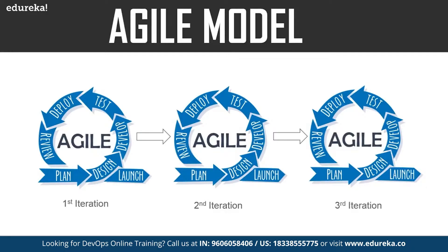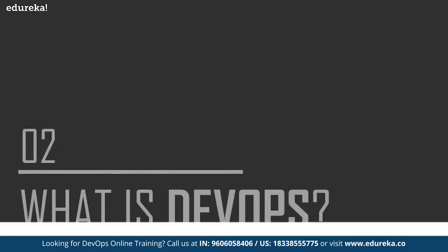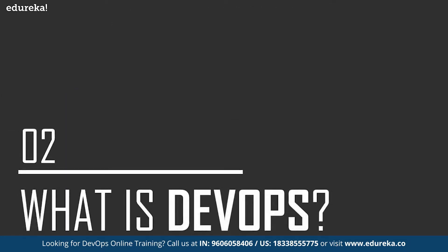So this model was better than the previous model, but it too had a few drawbacks. While this model brought agility to the development team, the operations team still did not come up to speed with the development team. Because of this, there was constant conflict between the development team and the operations team, which hampered the pace of software development and release. This was the biggest drawback of the agile model, and the next approach is the DevOps approach.